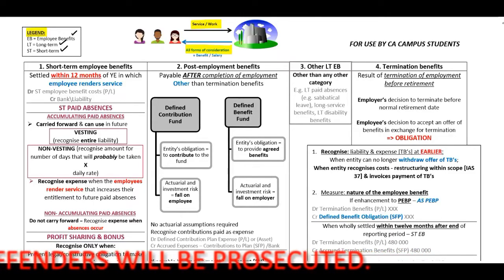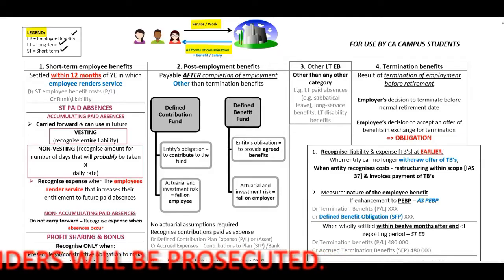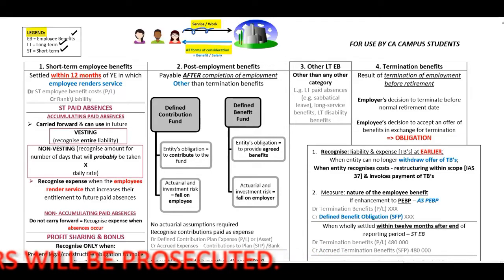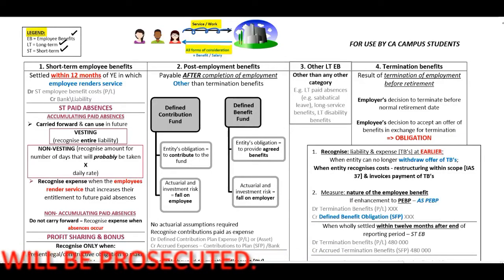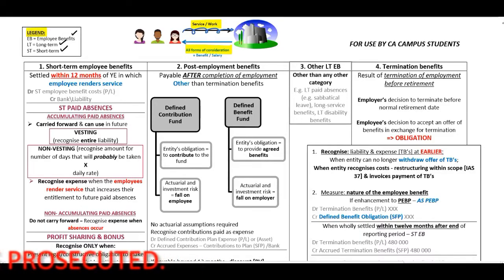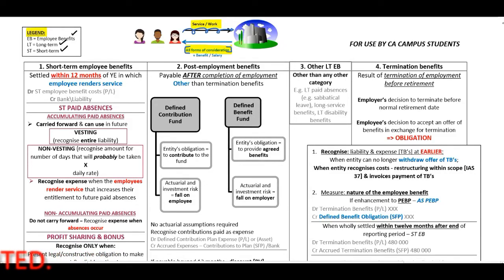The types of services that can be provided by employees to the entity can be full-time, part-time, permanent, casual, or temporary. When we look at all forms of consideration, this will be benefits or salaries, and benefits can be paid either to employees, dependents, or even beneficiaries.